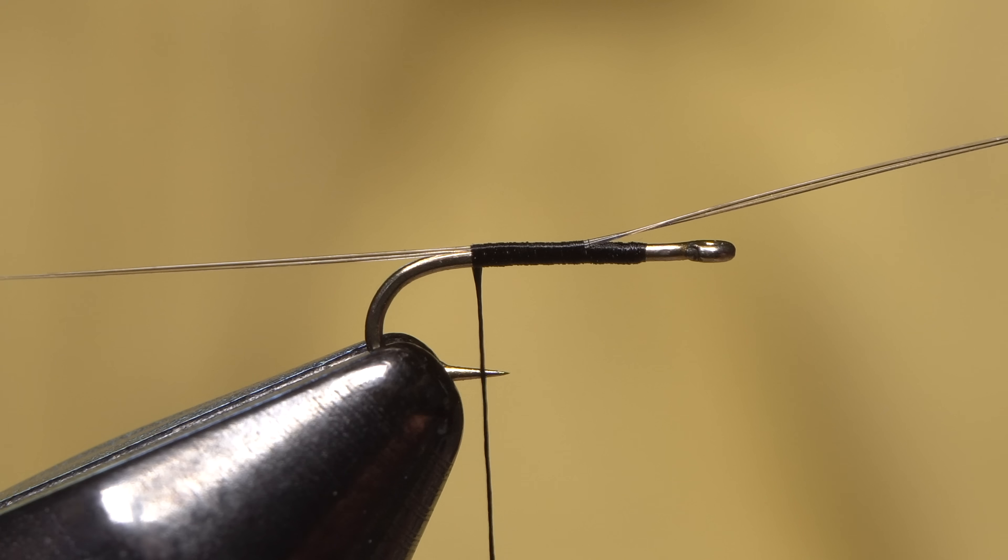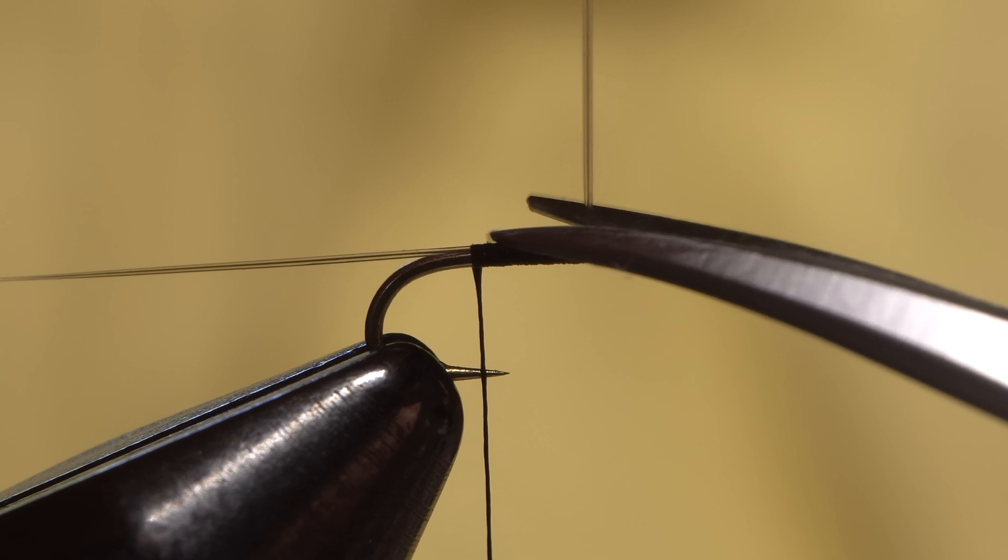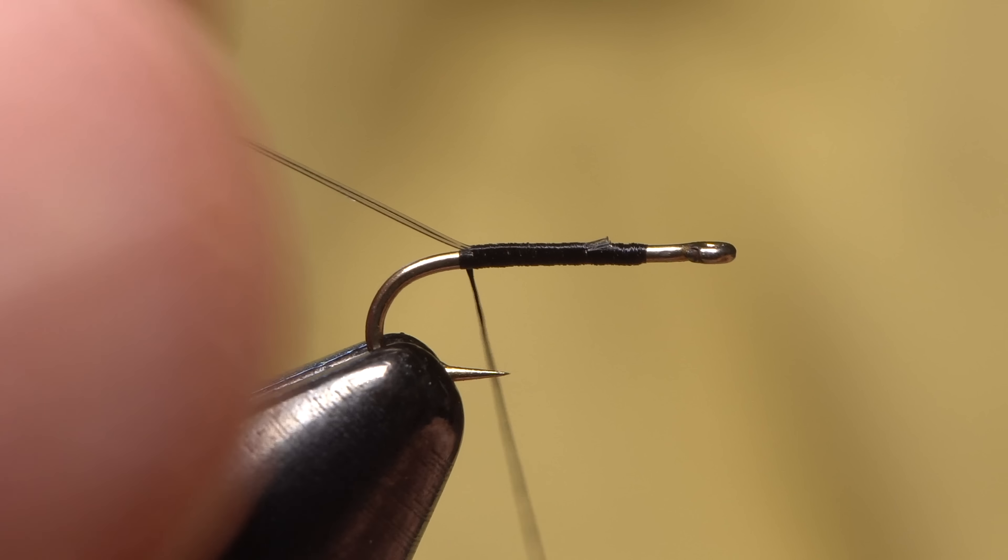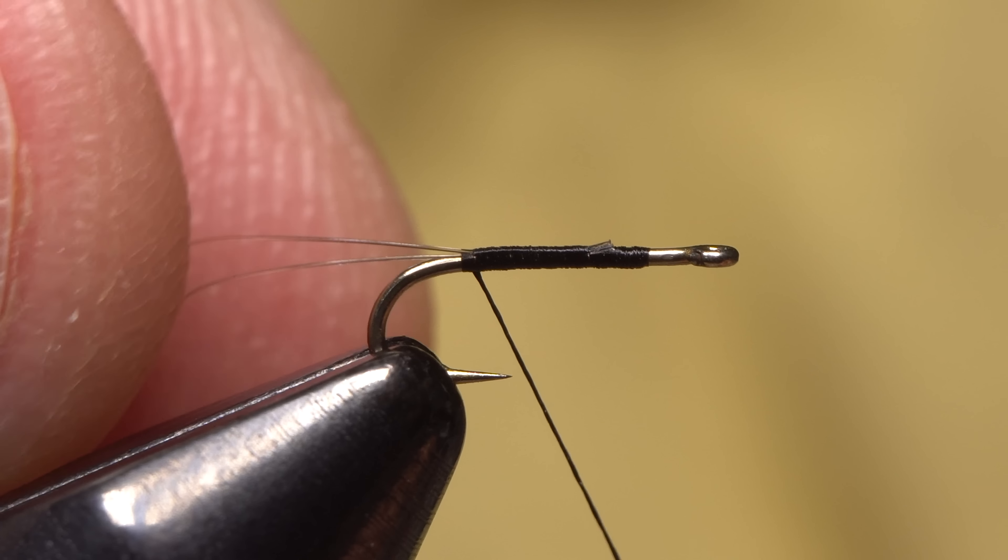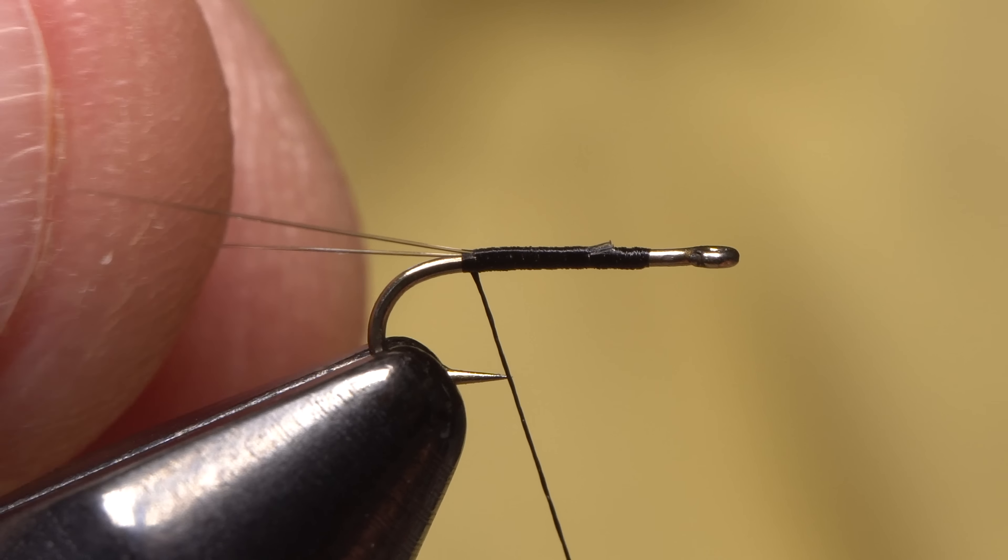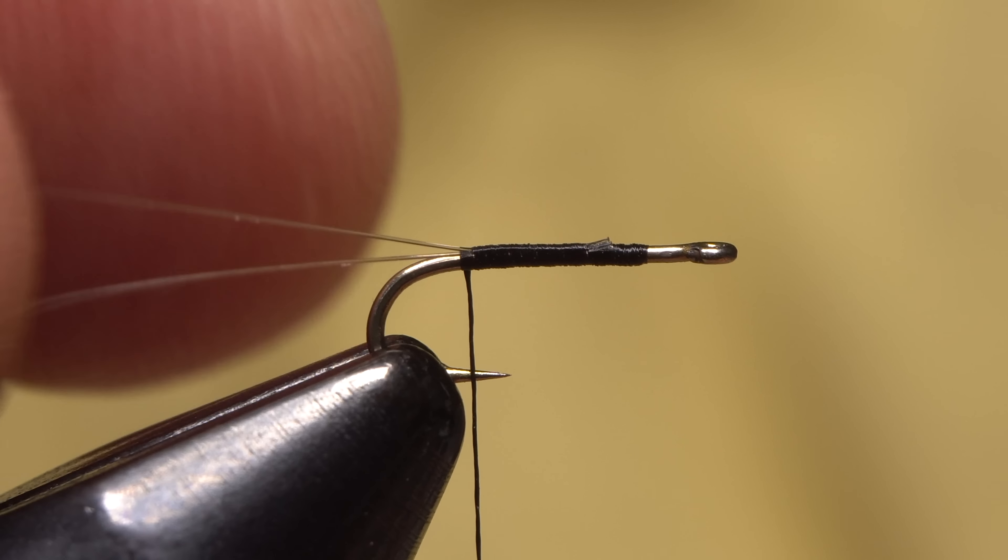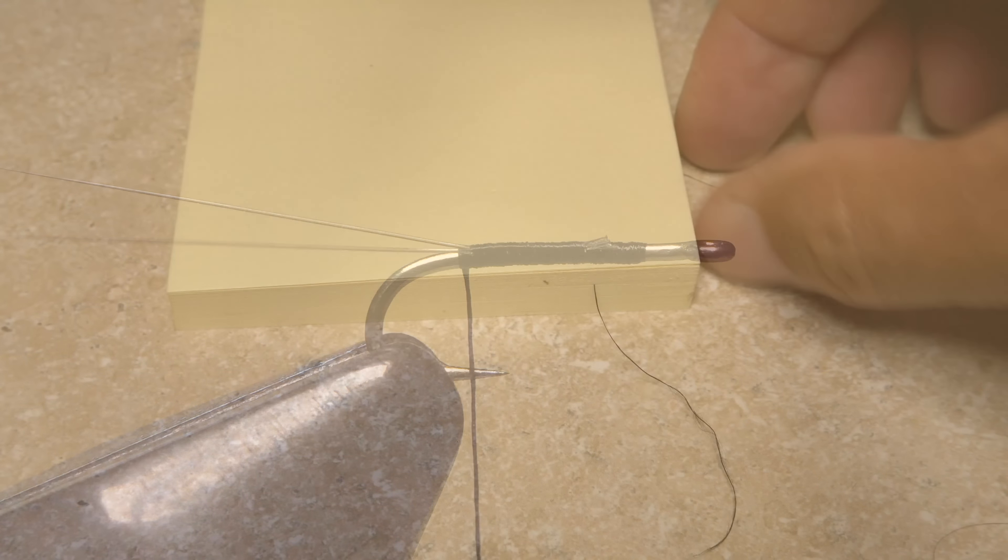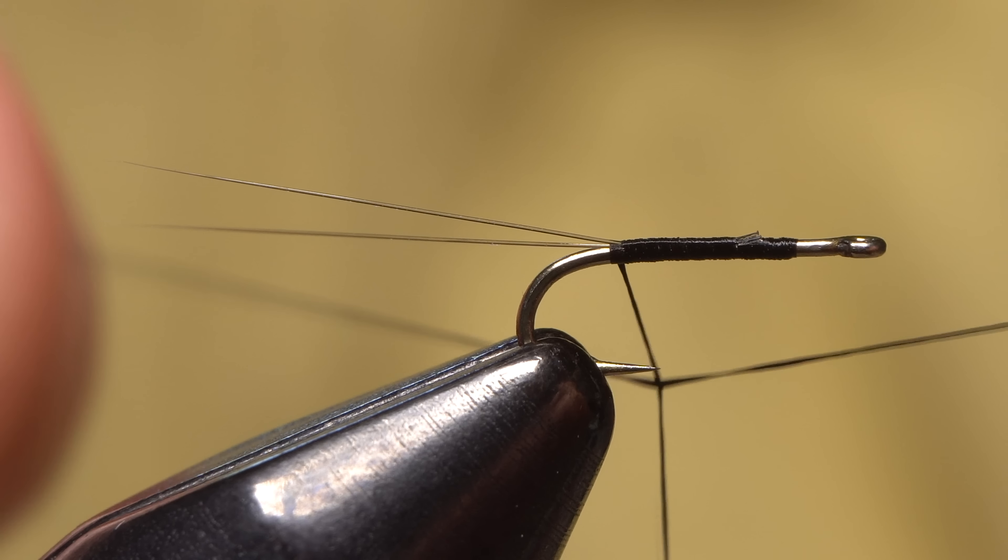Get the fibers placed directly on top of the hook shank and take thread wraps to anchor them there. Go all the way back to the start of the bend, then snip the excess butt ends off close. Lift the fibers up and take a tight thread wrap underneath them, which should help display them ever so slightly. Keeping the tails separated can be tricky as they're hard to see.